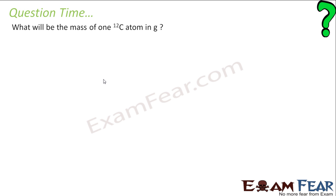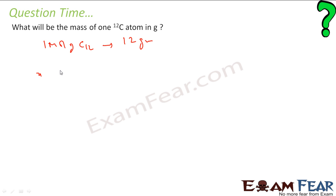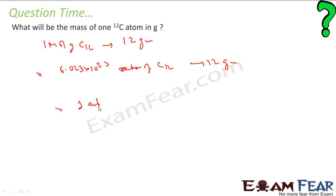What will be the mass of 1 atom of C-12 carbon? We know that 1 mole of C-12 carbon is 12 grams, and 1 mole contains 6.023 × 10²³ atoms. Therefore, 1 atom = 12 / (6.023 × 10²³) = 1.993 × 10⁻²³ grams.